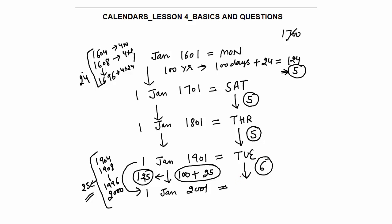6 odd days after Tuesday: Tuesday is the 2nd day, 2+6=8, 8 divided by 7 gives remainder 1, so again this will be a Monday. Now what we have learned: a 100-year gap same date to same date will have 5 odd days without a century leap year, whereas a 100-year gap with a century leap year will have 6 odd days.